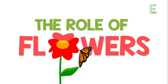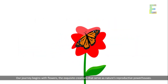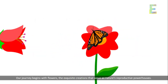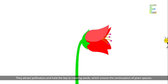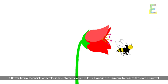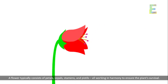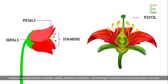The role of flowers: our journey begins with flowers, the exquisite creations that serve as nature's reproductive powerhouses. They attract pollinators and hold the key to creating seeds, which ensure the continuation of plant species. A flower typically consists of petals, sepals, stamens, and pistils, all working in harmony to ensure the plant's survival.